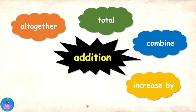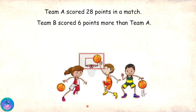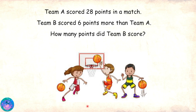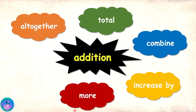Now listen to this situation. Team A scored 28 points in a match. Team B scored 6 points more than Team A. How many points did Team B score? Well, 6 points more than Team A — so it means that we need to bring together 28 points and 6 points. And the keyword that tells us that is 'more.' Correct, Sam. 'More' is yet another keyword for addition.